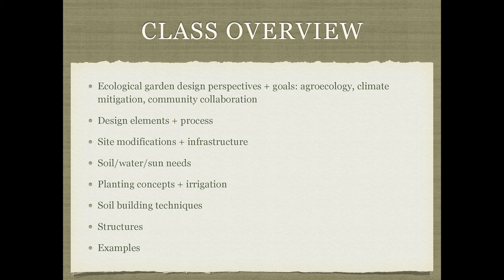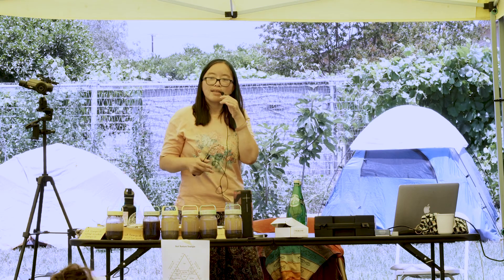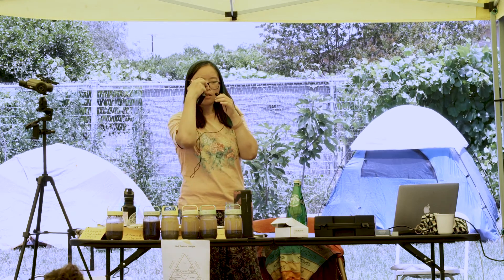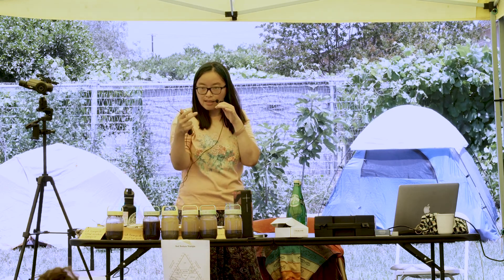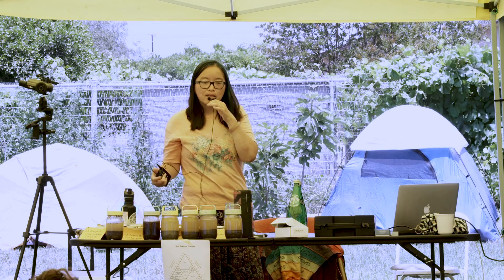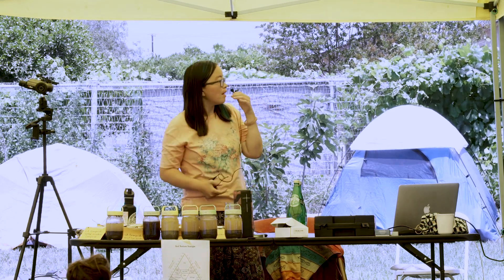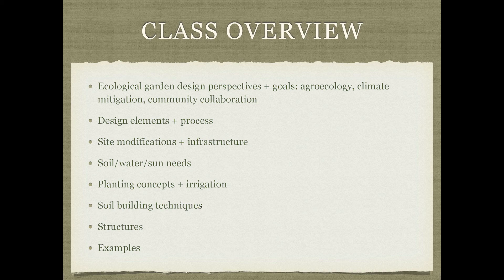We're going to talk about the perspectives and goals, the various design elements, site modifications, and infrastructure to think about. When you come into a vacant lot, sometimes there's a water hookup, sometimes there's not, so you may have to install those things. Is there power on site? Any infrastructure already there? If it's completely empty, you'll have to introduce those elements. Consider existing plant life — if there are existing trees offering shade, you can design around them and think about soil, water, and sun needs.